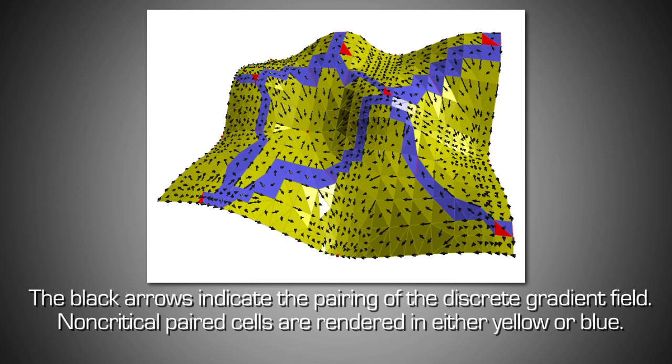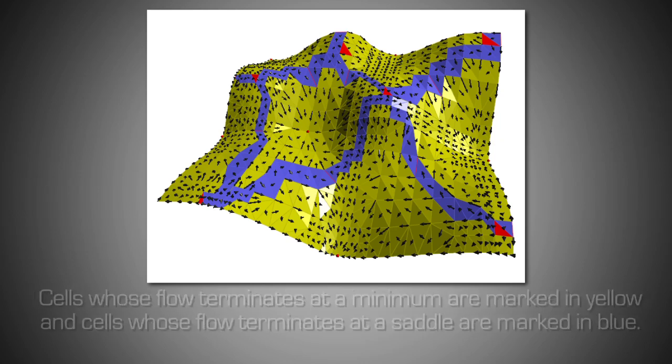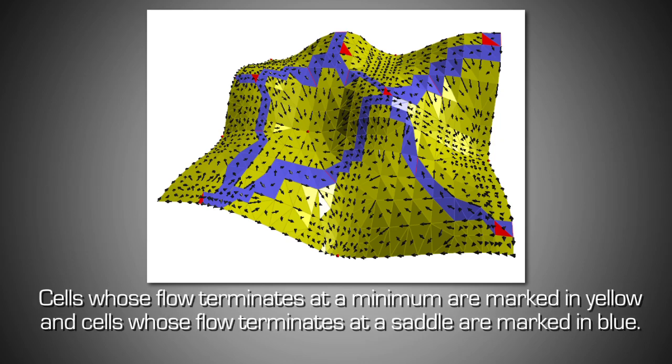The black arrows indicate the pairing of the discrete gradient field. Non-critical paired cells are rendered in either yellow or blue. Cells whose flow terminates at a minimum are marked in yellow, and cells whose flow terminates at a saddle are marked in blue.